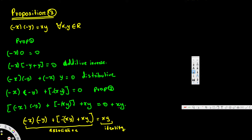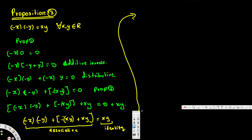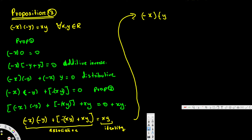When you add zero plus xy, zero can be eliminated — that's the identity. Now by additive inverse, negative x times negative y plus negative x times negative y, when you add these two together that's going to be zero, so that equals xy. Here we applied additive inverse.